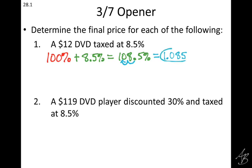And what's this number here called? It's a multiplier. So what we're paying is 108.5% of the original price of the DVD, so we can multiply it by this decimal here to get our final price. So what's that going to look like? How do we do that? What are we multiplying that 1.085 by?